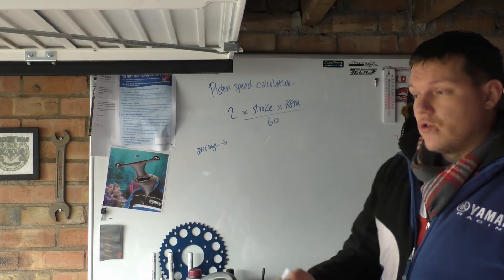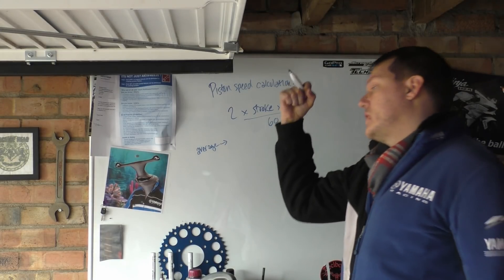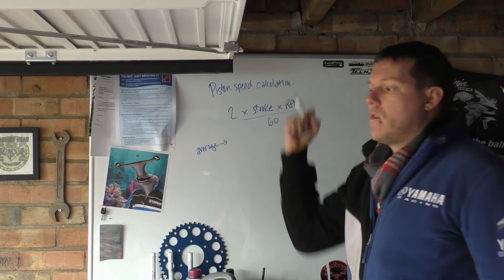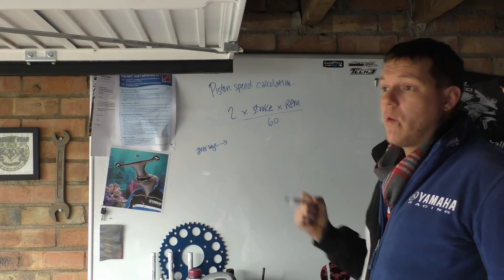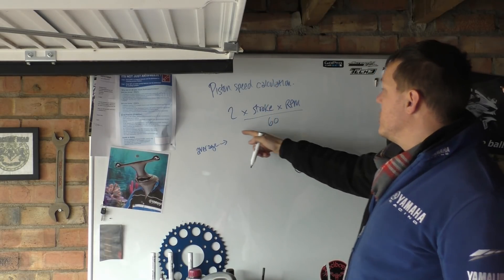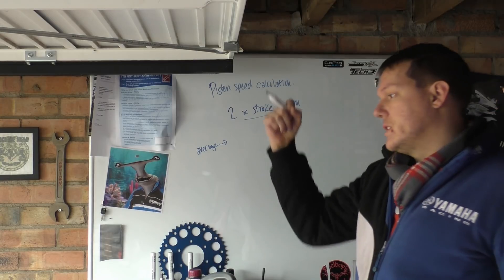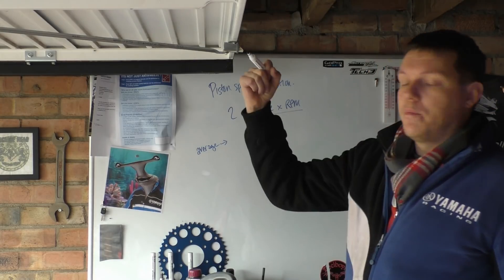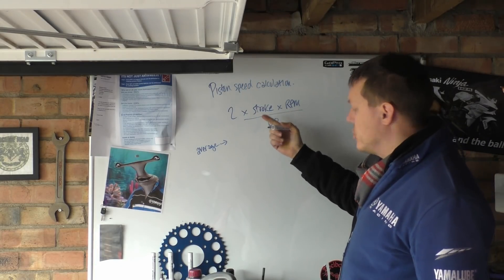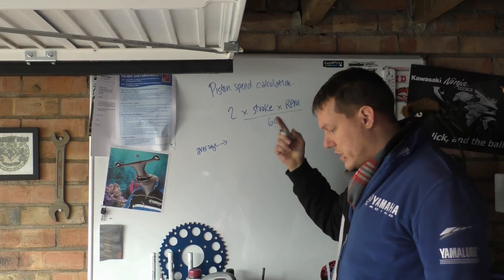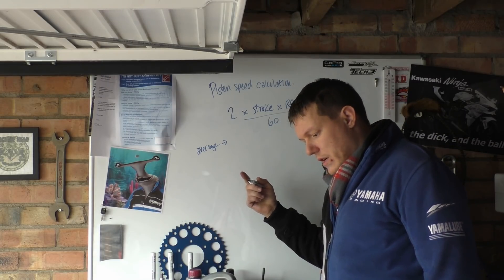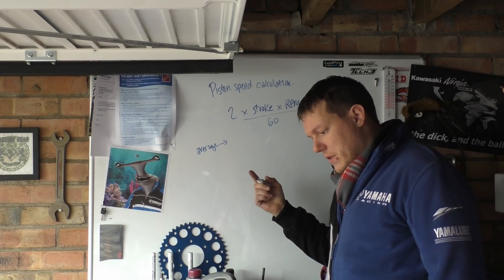So, two times our stroke — because our stroke is one down, and one down is not enough, we want to know about one up as well. So two times our stroke is up and down — that's two strokes. Let's just say our stroke is — what did I write down?